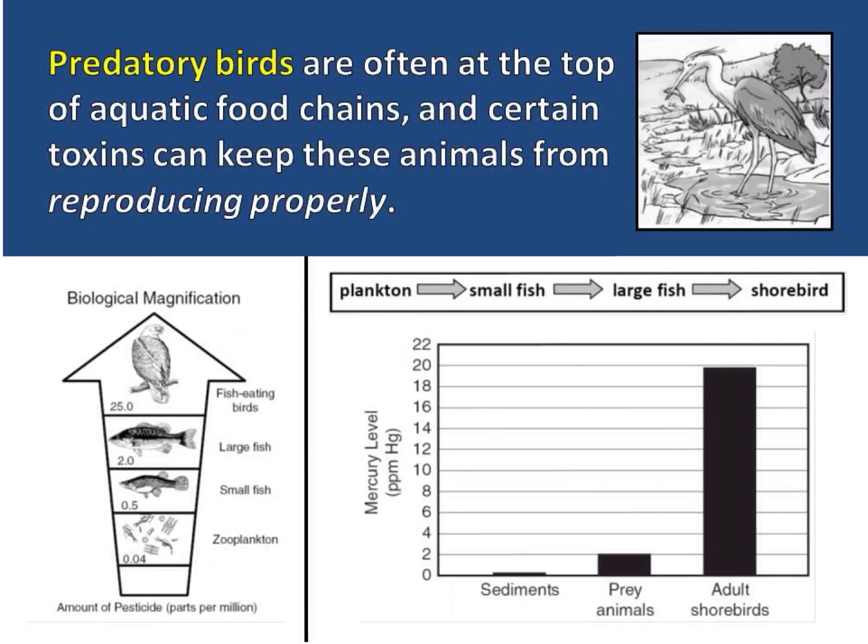Predatory birds are often at the top of aquatic food chains, and certain toxins can keep these animals from reproducing properly. For instance, some pesticides actually cause the structure of eggs to be much weaker than they should be. When the birds sit on these eggs, it actually causes them to crack and destroys the egg, preventing these bird populations from reproducing as they should.